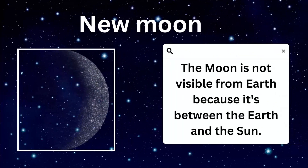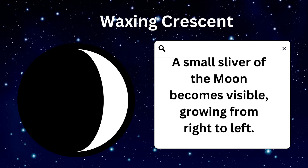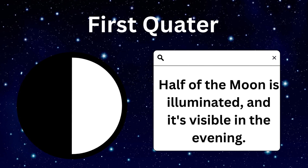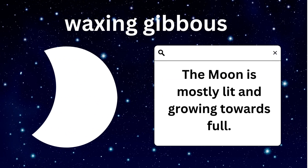New moon: The moon is not visible from earth because it's between the earth and the sun. Waxing crescent: A small sliver of the moon becomes visible, growing from right to left. First quarter: Half of the moon is illuminated and it's visible in the evening. Waxing gibbous: The moon is mostly lit and growing towards full.